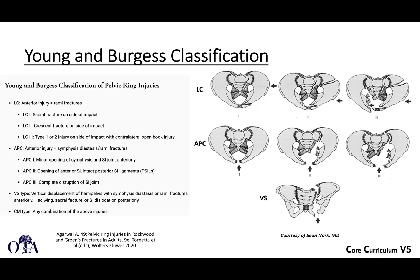The arrows on the diagrams demonstrate the direction of impact. LC and APC each have subtypes 1, 2, and 3 in order of increasing severity. The arrows show impact direction — for APCs, the impact is anterior-posterior. The vertical shear mechanism is shown below, and the combined mechanism type is any combination of the above.